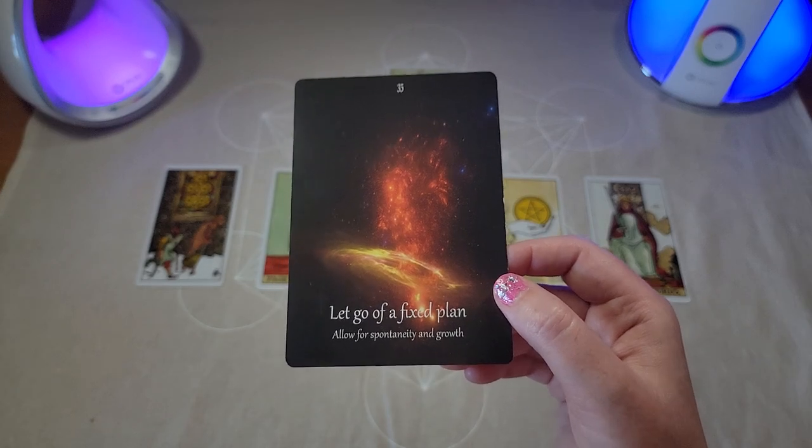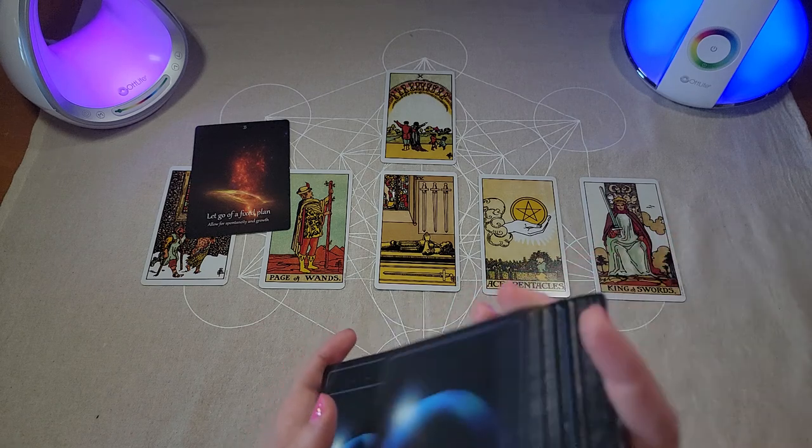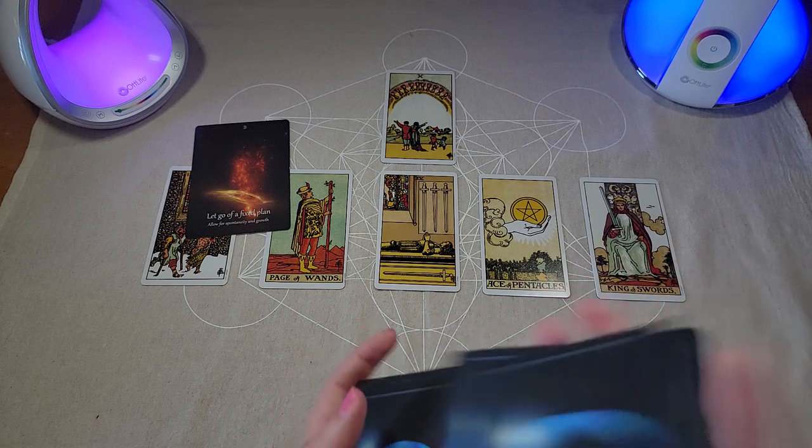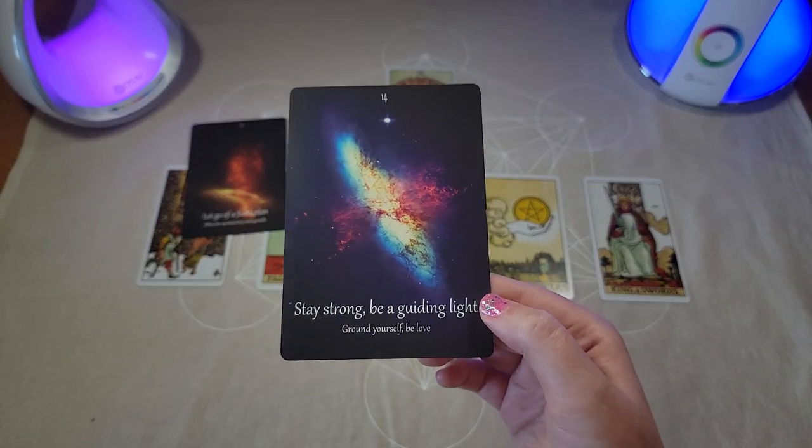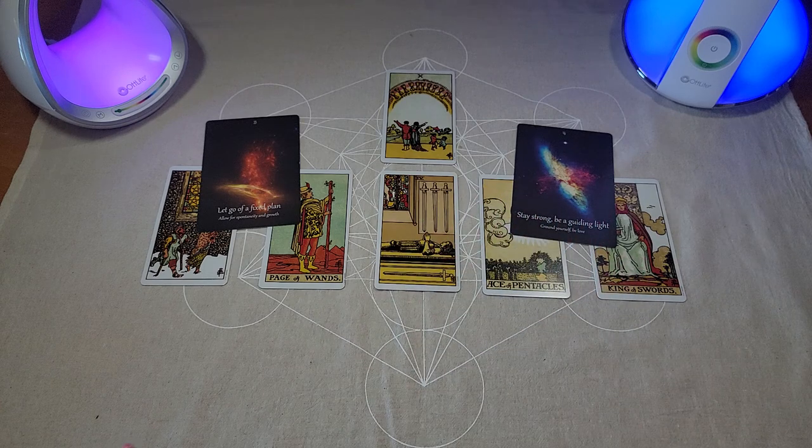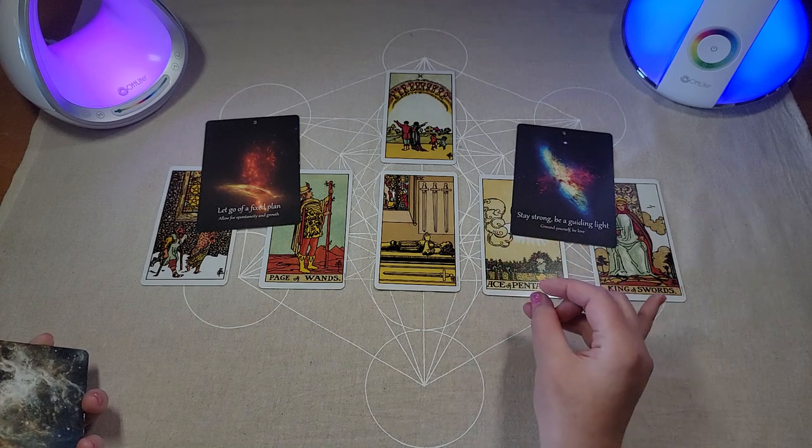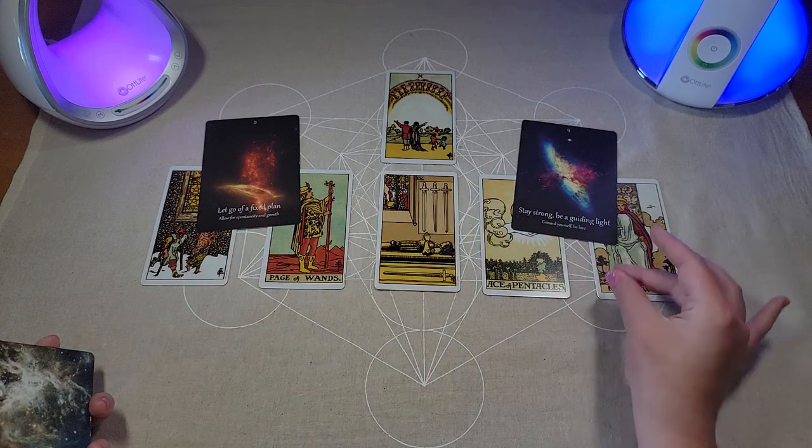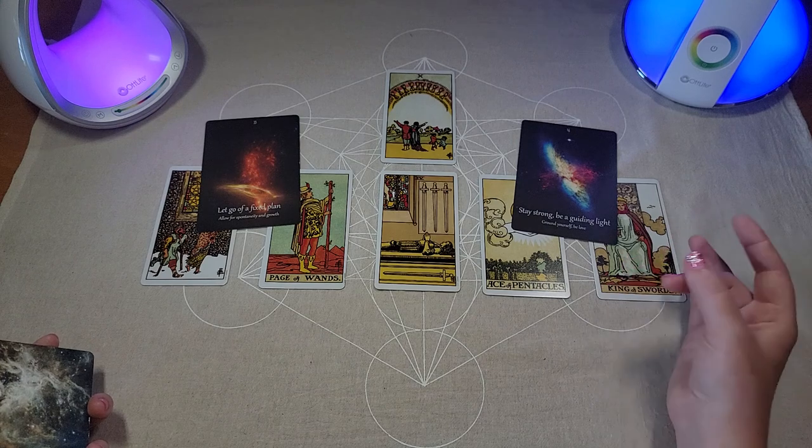Let go of a fixed plan. Allow for spontaneity and growth. Well, yes. We know we are confused, and we're trying to make our peace with the confusion. We are letting go of a fixed plan. We are allowing for spontaneity and growth. Yes. Stay strong. Be a guiding light. Ground yourself. Be love. For some of you, if the feeling of focusing on something above your head doesn't seem to help you make your peace with confusion, maybe for some of you a more emotional exercise will work better when you just focus on love. Just focus on love. Ground yourself. Be love. Be the love you want to experience in the world.